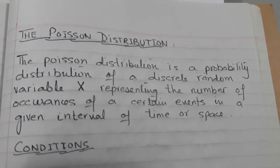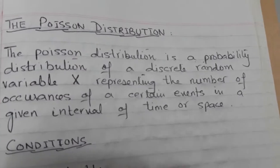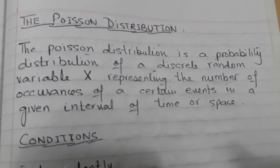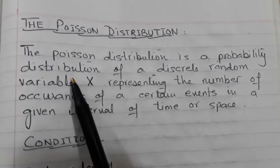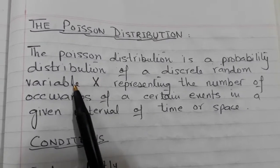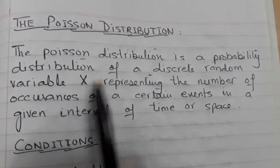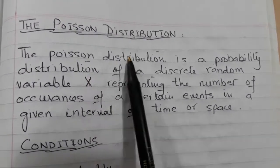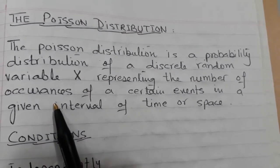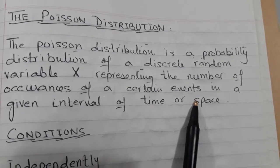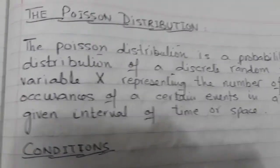So let's see what a Poisson distribution is. Everything I am speaking I have also written, because just listening is not sufficient — people want to see what is written. The Poisson distribution is a probability distribution for discrete random variables. In S1 you have seen that the normal distribution is for continuous random variables. The Poisson distribution is for discrete random variables where X represents the number of occurrences in a certain time period or a certain space.